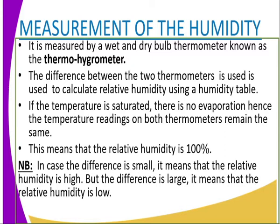If the temperature is saturated, there is no evaporation, hence the temperature readings on both the wet and dry bulb thermometers remain the same. This means that the relative humidity is 100%. In case the difference is small, it means that the relative humidity is high. But if the difference is large, it means that the relative humidity is low. That is how we calculate the humidity from the wet and dry bulb thermometer.